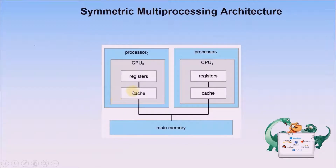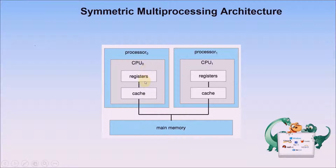Here is an example of symmetric multi-processing architecture. Processor zero and processor one share the main memory. Each CPU has its own registers and cache, but the main memory is shared between them.